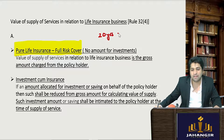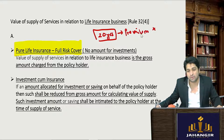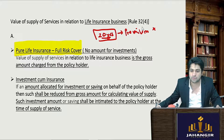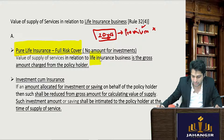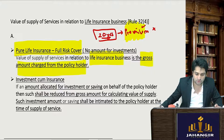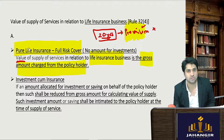For those 20 years you keep paying the premium and you are insured during that period. If there is a death of the policyholder within the 20 years, the beneficiaries will get a certain amount; if there is no death, nothing is given to the beneficiary and the premiums go to the insurance company. The value of supply in relation to life insurance business is the gross amount charged from the policyholder — whatever the policyholder pays as premium, the entire amount is the value of supply and GST is levied on it.